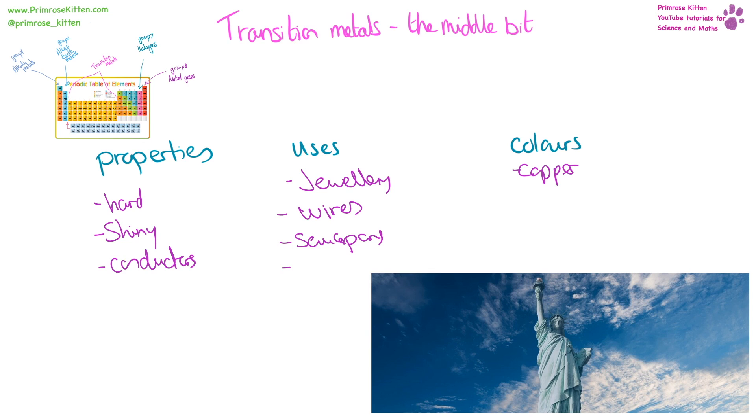Copper transition metal compounds are generally going to be blue or a bluey green. Iron two is light green. Iron three is an orangey, brown rust color. And cobalt is a really lovely, deep, rich blue.